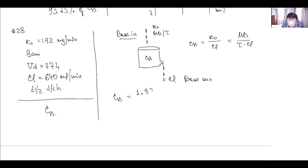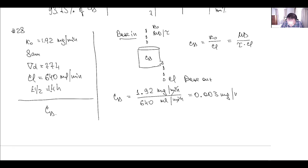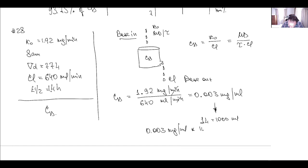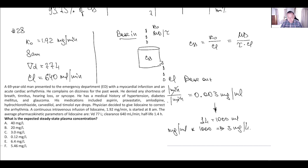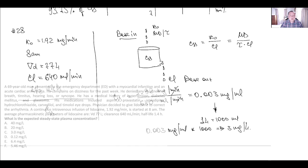Be careful with units. 92 milligrams per minute divided by 640 milliliters per minute — crossing minutes gives 0.003 milligrams per milliliter. But we need concentration in milligrams per liter, so we need to convert. Since 1 liter equals 1000 milliliters, we multiply 0.003 milligrams per milliliter by 1000, giving us 3 milligrams per liter. That is the right answer.